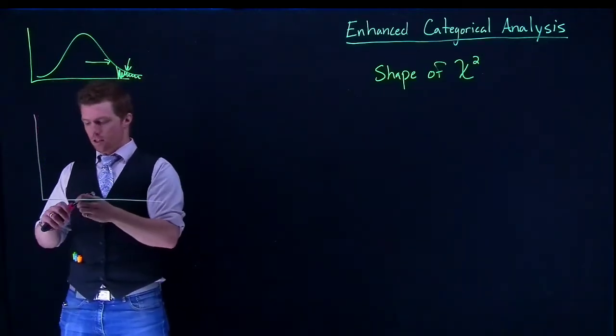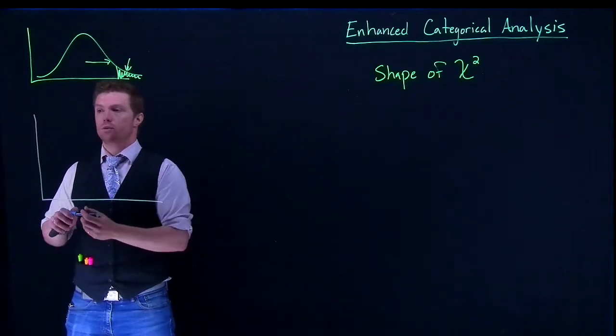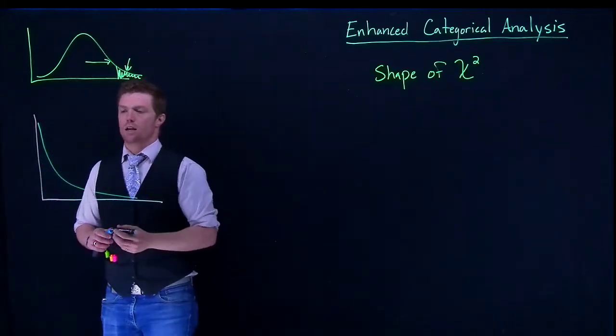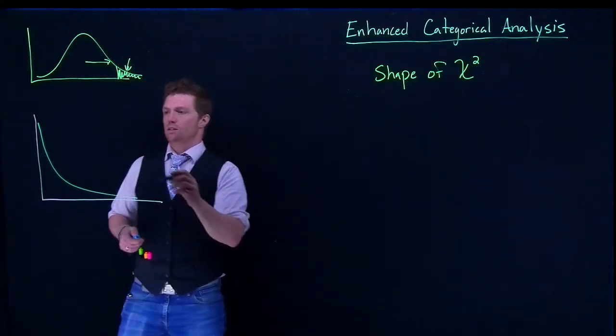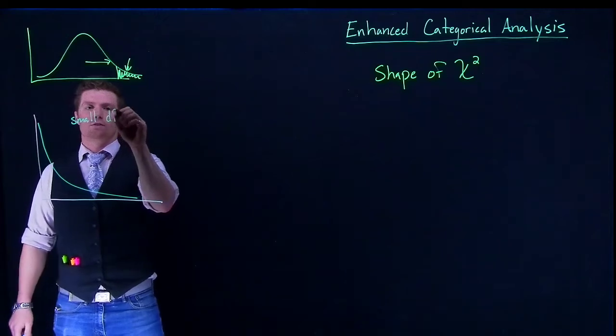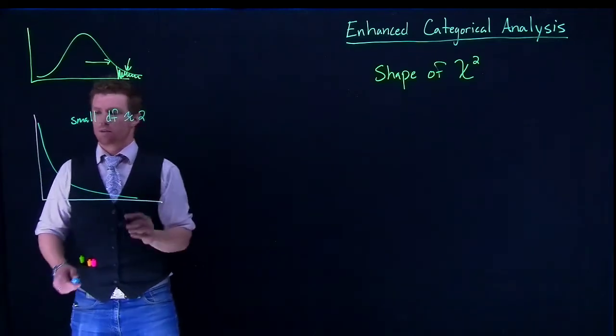If we have very small degrees of freedom with our chi-squared, it kind of looks like this. That's what our chi-squared winds up being. This is small degrees of freedom, like two or something.